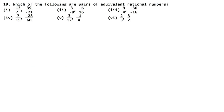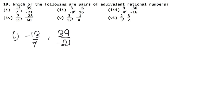Let's do the next question now. This question says: which of the following are pairs of equivalent rational numbers? The first part is minus 13 upon 7 and 39 upon minus 21. To check if they are equivalent fractions, we convert both to standard form. If both standard forms are the same, they are equivalent fractions, otherwise not.